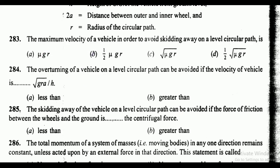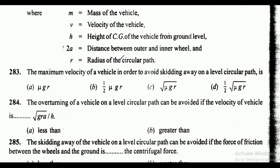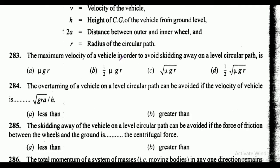Question 283: the maximum velocity of a vehicle in order to avoid skidding away on a level circular path. The correct answer is option C, that is under root of mu gr.